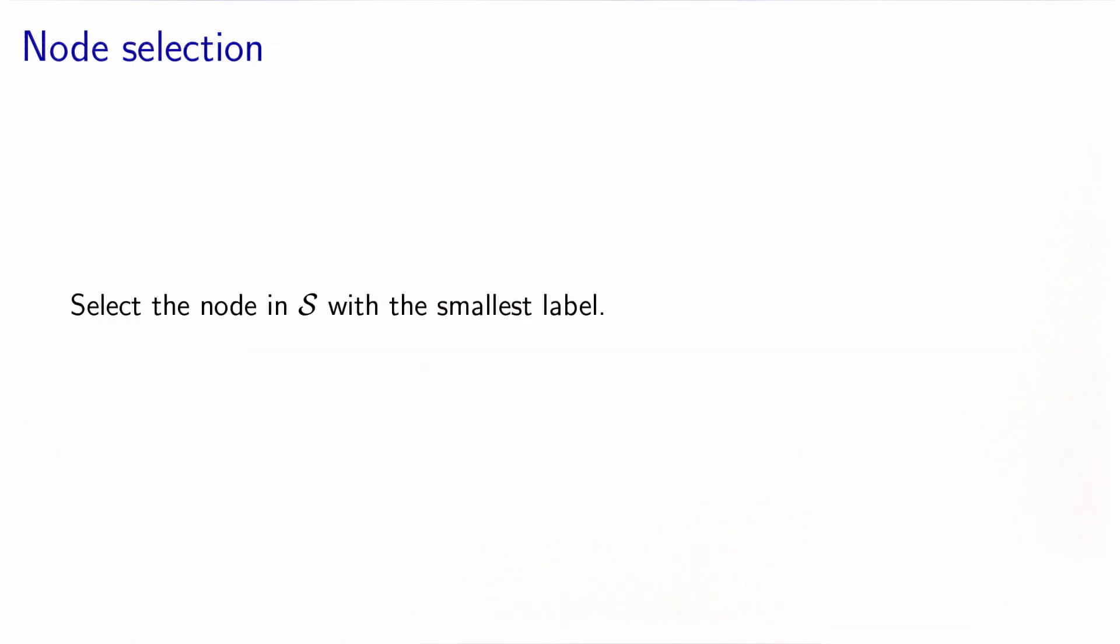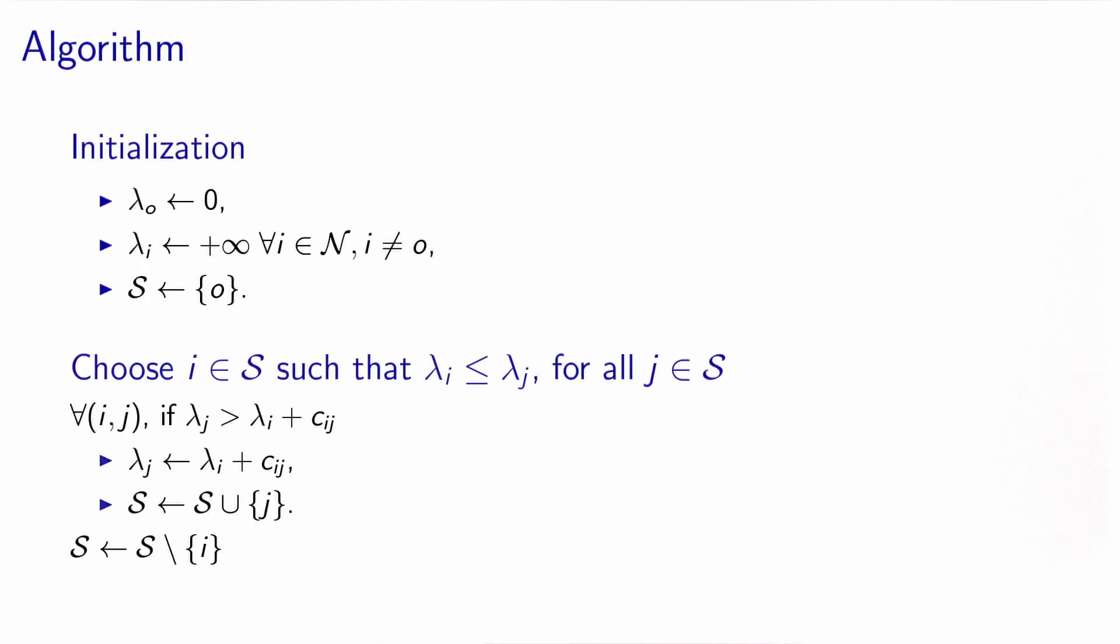The second modification provides a specific rule for the choice of the node that is treated at each iteration. Actually, we didn't specify any rule in the generic shortest path algorithm. We just said select one node in S and proceed. In this case, we will select the node in S which is associated with the smallest label. Dijkstra's algorithm is the same as the shortest path algorithm, including these two modifications.